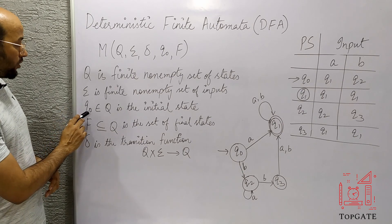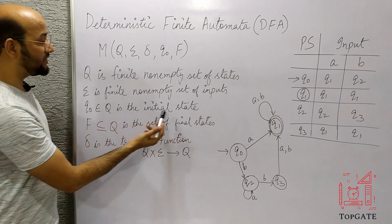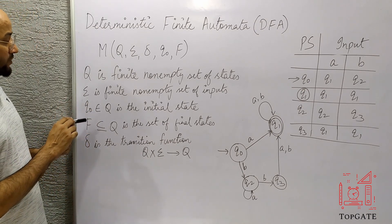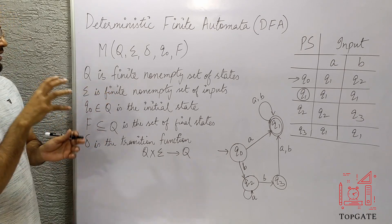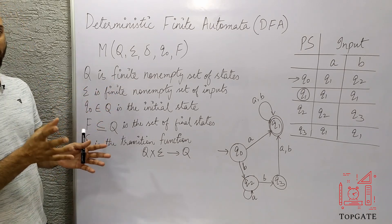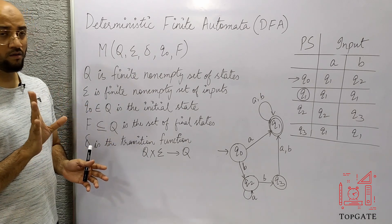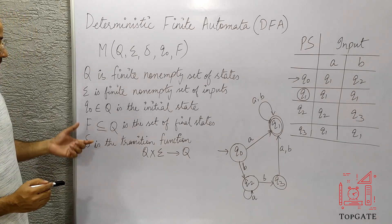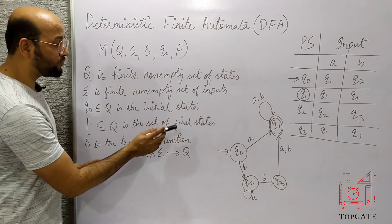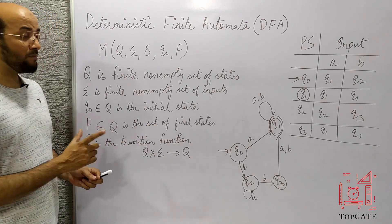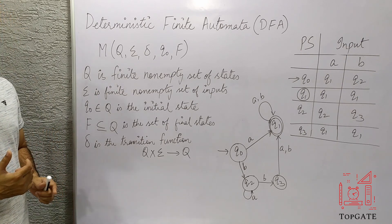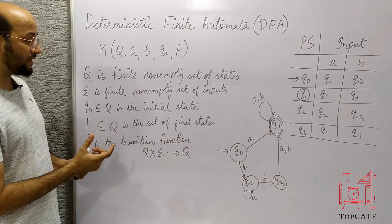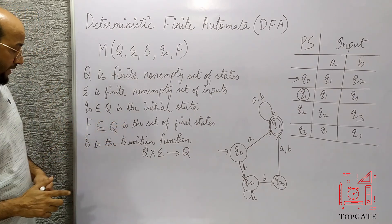Q naught belongs to Q — it is the initial state. That means Q naught should be from Q only, that is from the set of states. If there are three states, out of those three states, one should be the initial state. F is a subset of Q — F is the set of final states. There can be more than one final state in a finite automata, and all those states should belong to capital Q.